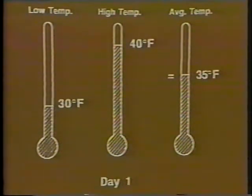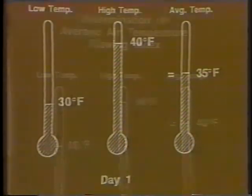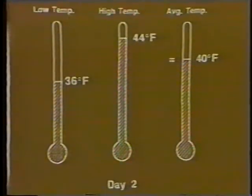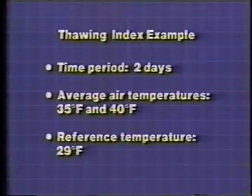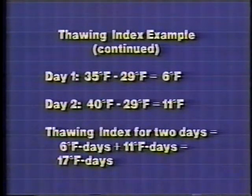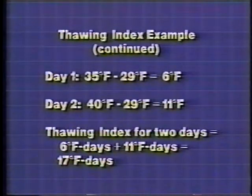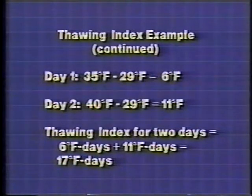For our thawing index example, day one has a low of 30 and a high of 40 degrees, giving an average of 35 degrees Fahrenheit. For day two, the average temperature is 40 degrees Fahrenheit. With a reference temperature of 29 degrees, day one's thawing index value is 35 minus 29 equals 6 degree Fahrenheit days. Day two's value is 11 degree Fahrenheit days. Adding these: 6 plus 11 gives a thawing index of 17 degree Fahrenheit days. The complete thawing index equals the addition of these daily values over the entire thawing period.